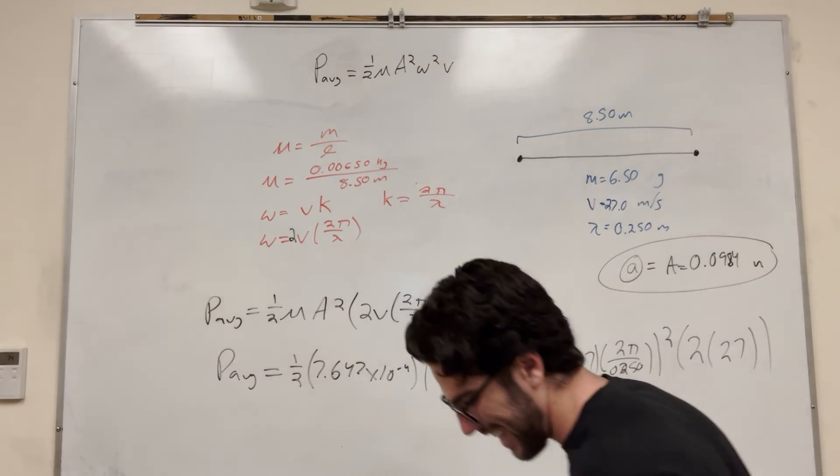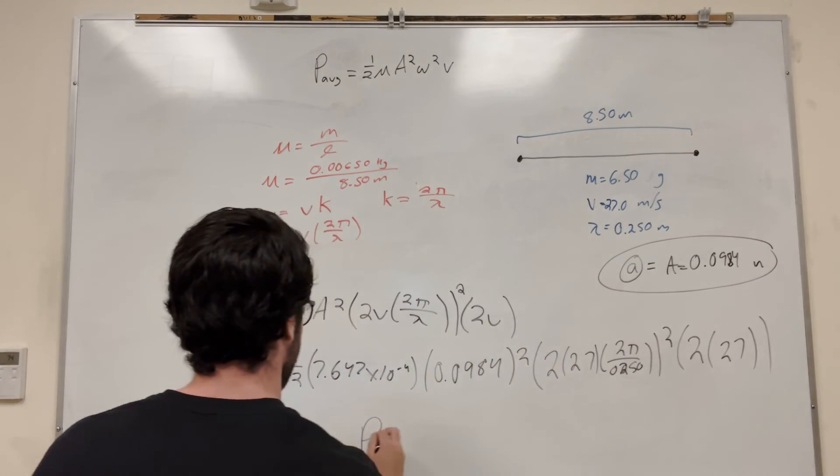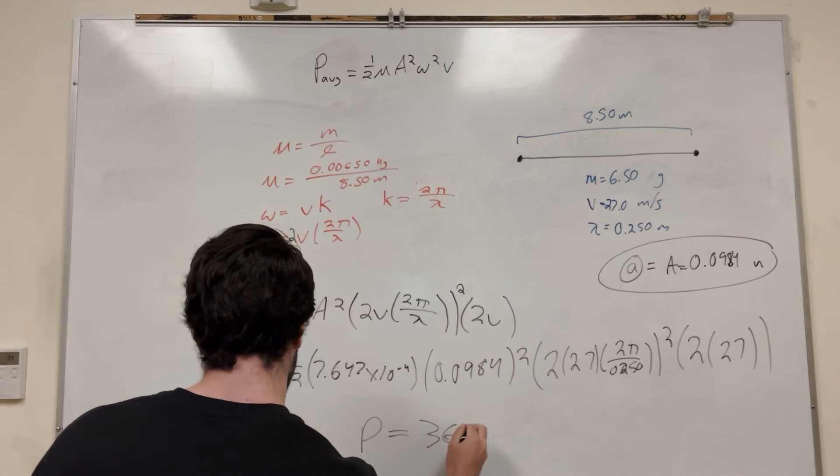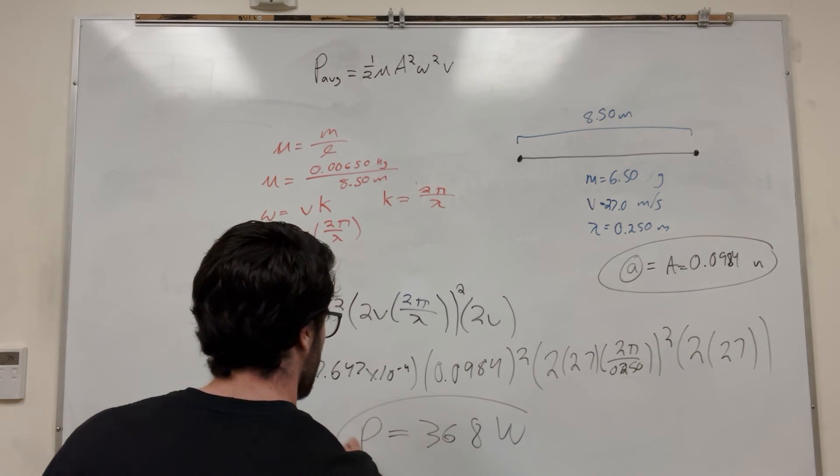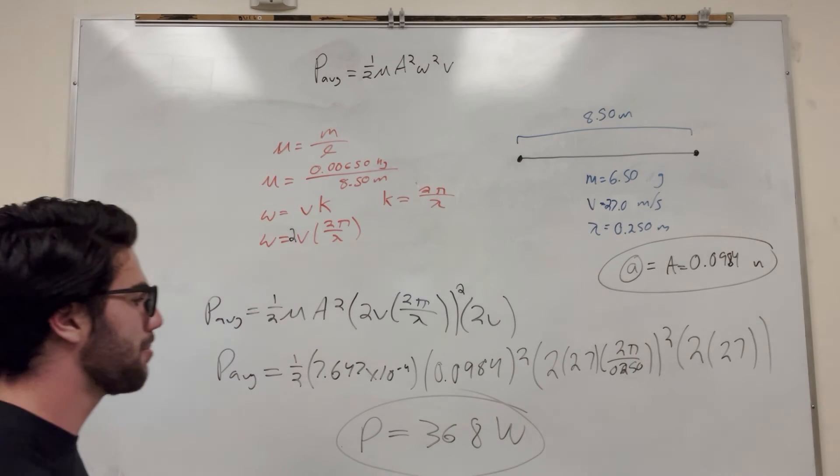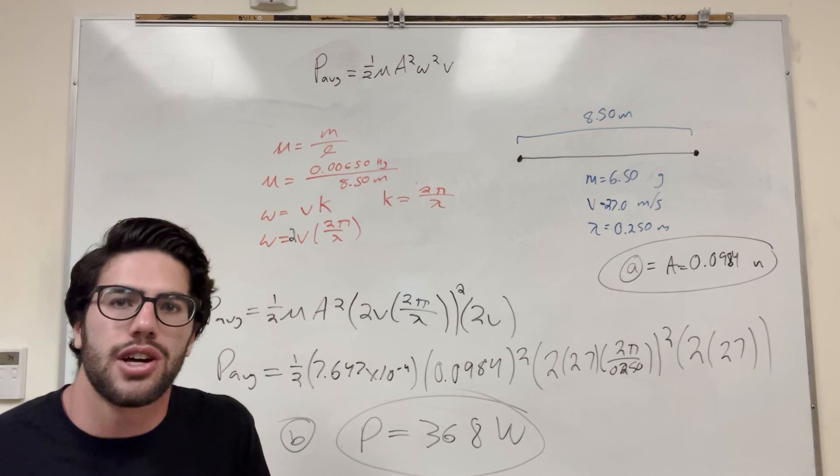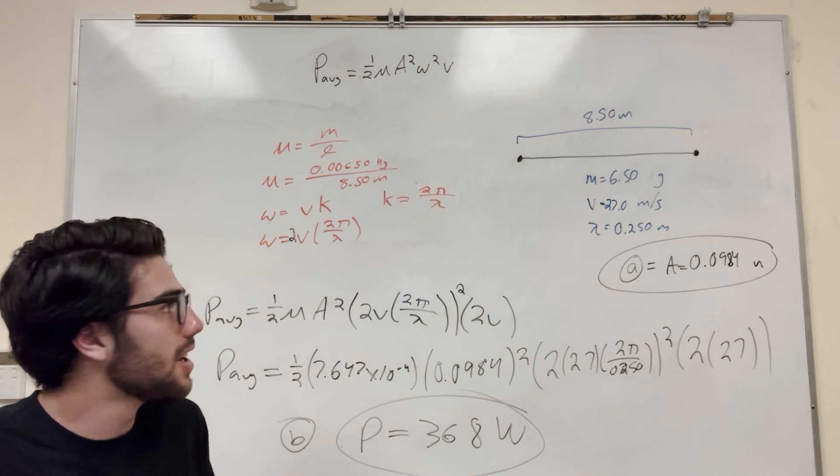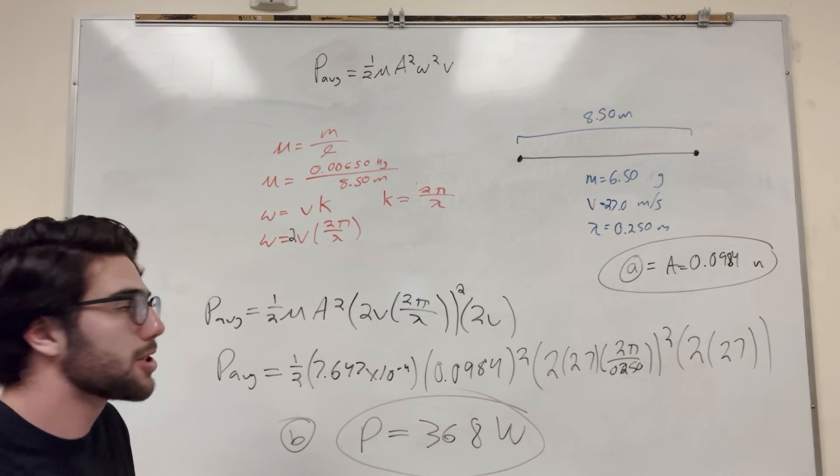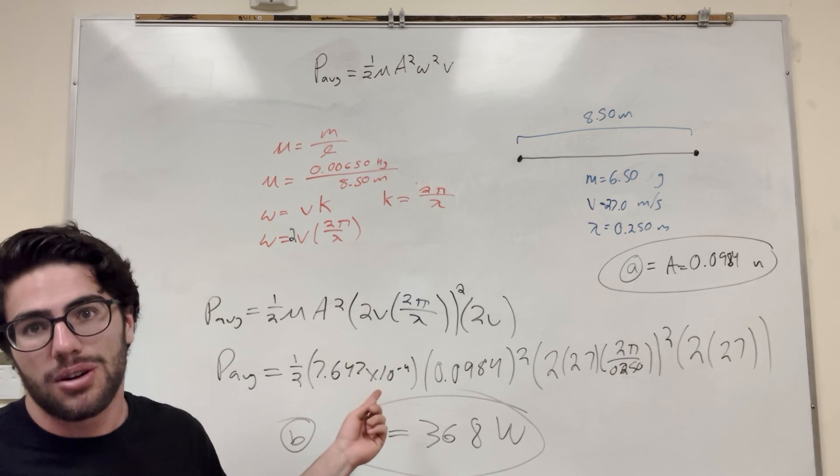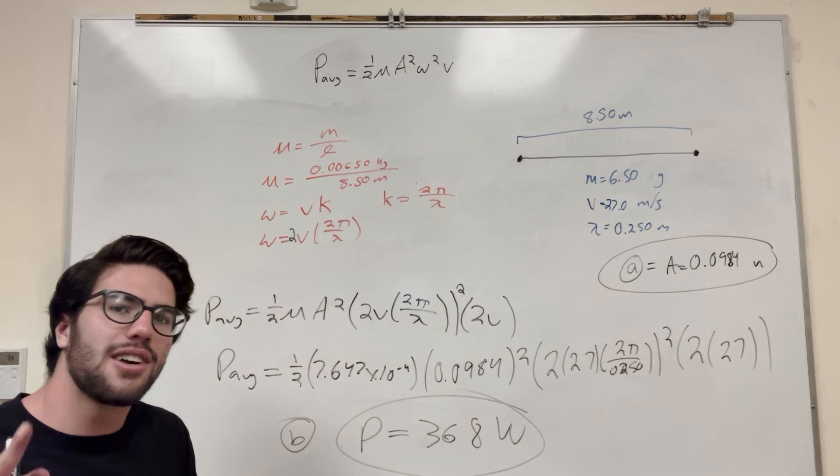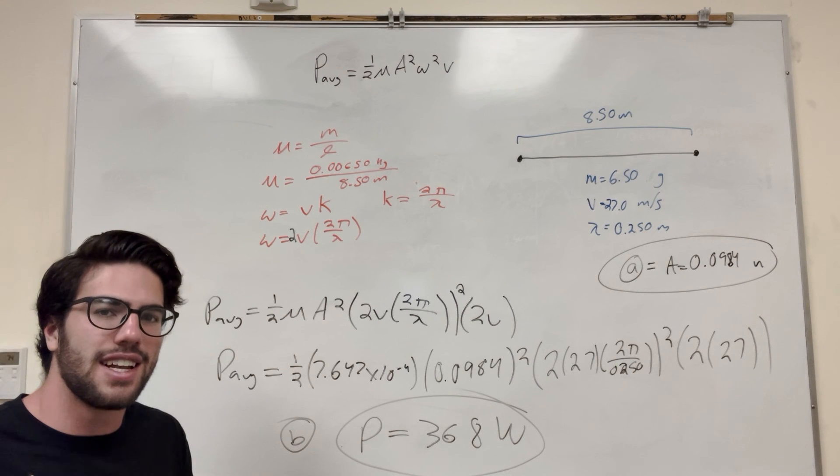And then after all that you get power that's equal to 368 watts. There you go, that's part B. That's how you solve this kind of problem. So not too difficult, just got to know your equations. Learn how to rearrange your equations. I'm sure right now you know how to do that. So yeah, you're probably chilling right now. Good luck with your physics homework, guys. I'll see you in the next one. Thanks for all the support.